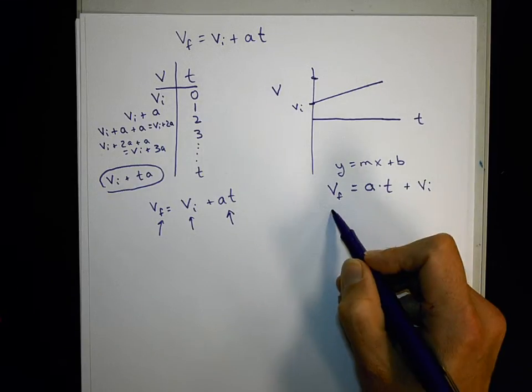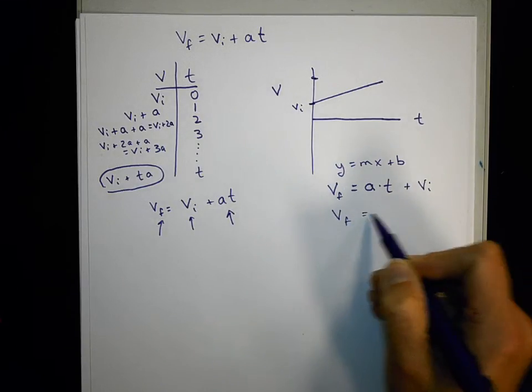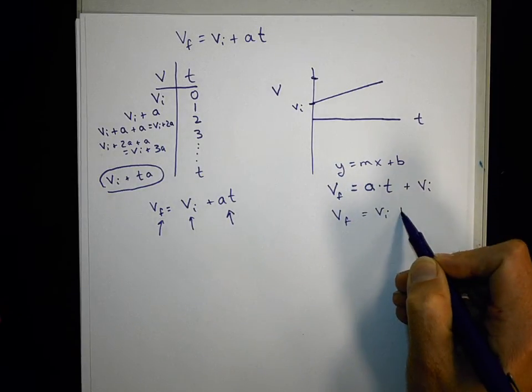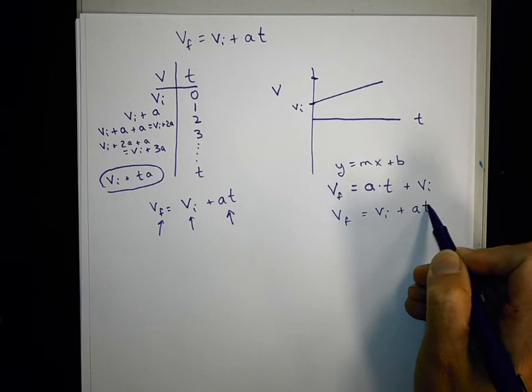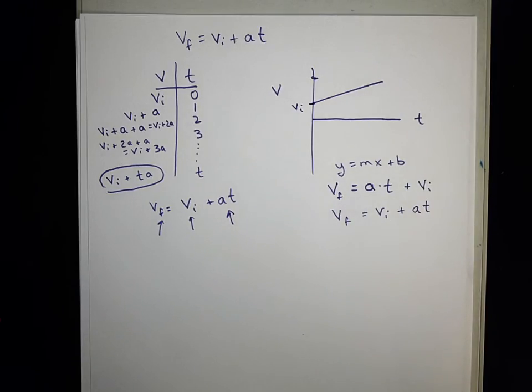So again, hopefully you can see this looks like the equation at the top: VF equals VI plus AT. There are a couple other ways to do it, but hopefully that gets you started for now.